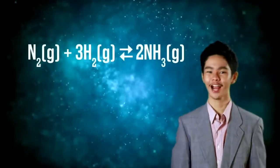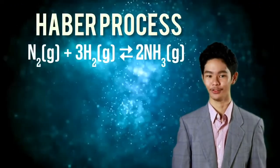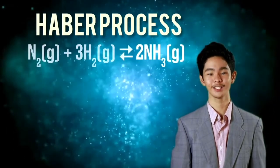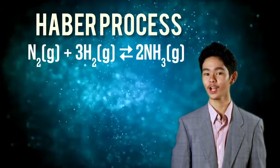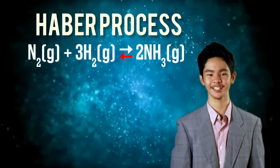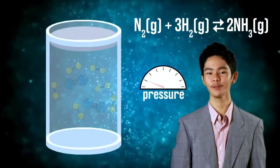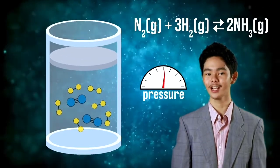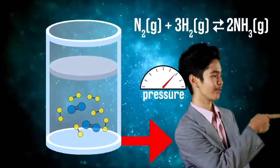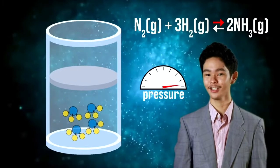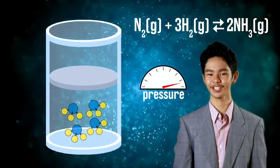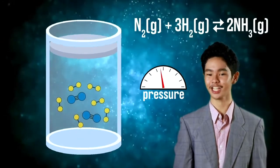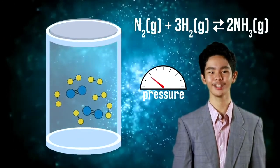Pressure. When we look at the equation for the Haber process, for example, 4 moles of gas react to form 2 moles of gas. The forward reaction decreases the volume while the reverse reaction increases it. Increasing pressure will put stress on high-volume reactants over low-volume products, so the reaction shifts to the right, fusing together to produce more ammonia. Decreasing the pressure has the opposite effect — the reaction proceeds in the direction that raises the pressure back to where it was before.